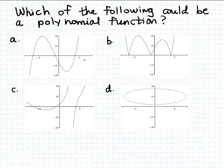In this example we want to determine which of the following graphs could be the graph of a polynomial function. Recall that the graph of a polynomial function is going to be a smooth unbroken curve and the domain of a polynomial function is all real numbers.